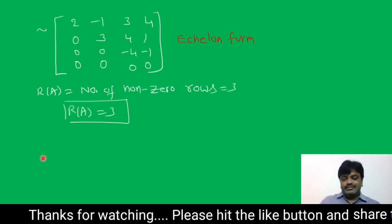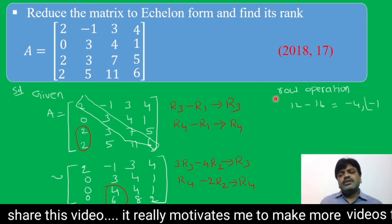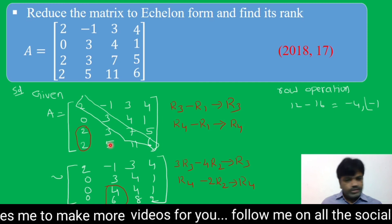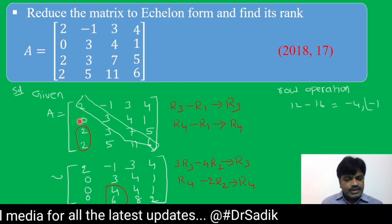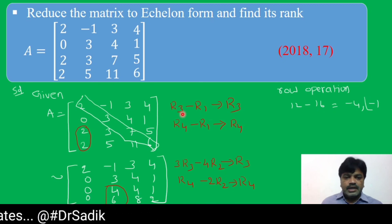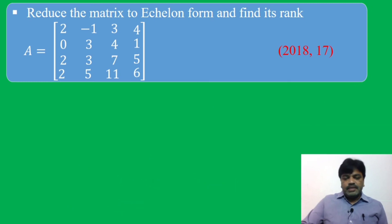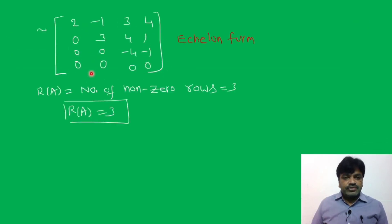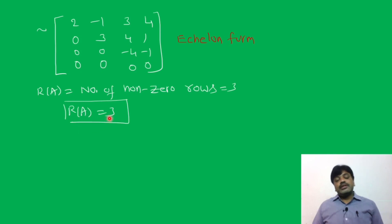Once again: the given matrix says reduce the matrix into echelon form and find its rank. We applied elementary row operations to make the below-diagonal elements 0. First using row 1 to make two elements 0, then using R2 to make two more elements 0, arriving at the echelon form. The rank of the matrix is 3.